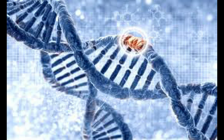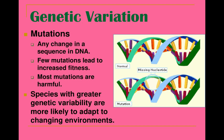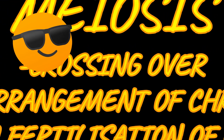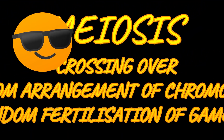Mutations are the underlying source of all variation, because they produce new forms or alleles of the gene, which can be reshuffled in sexual reproduction. This can happen in different ways.